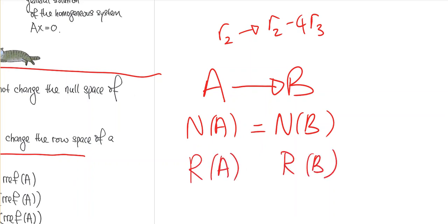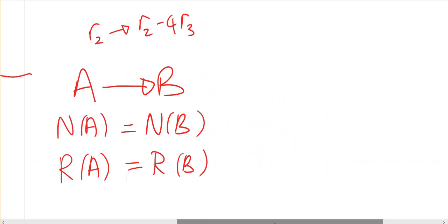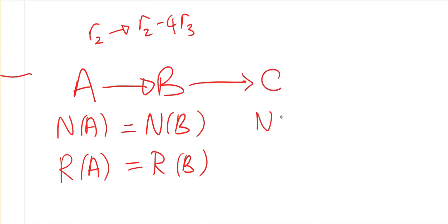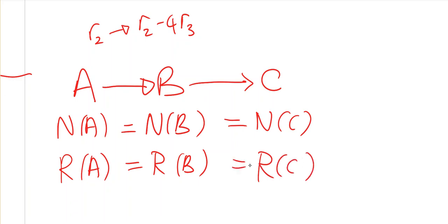Not only that — if you do another row operation to get to C, then again the null space of C is the same as null space of B, which is the same as null space of A. And this is also the same for the row space: the row space of C equals the row space of B equals the row space of A. Now you know where this is going, because usually when you are given a matrix you always row reduce it all the way to the RREF matrix.